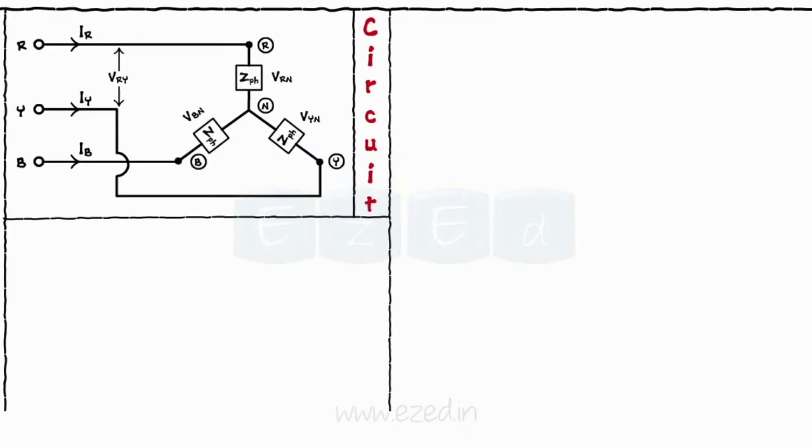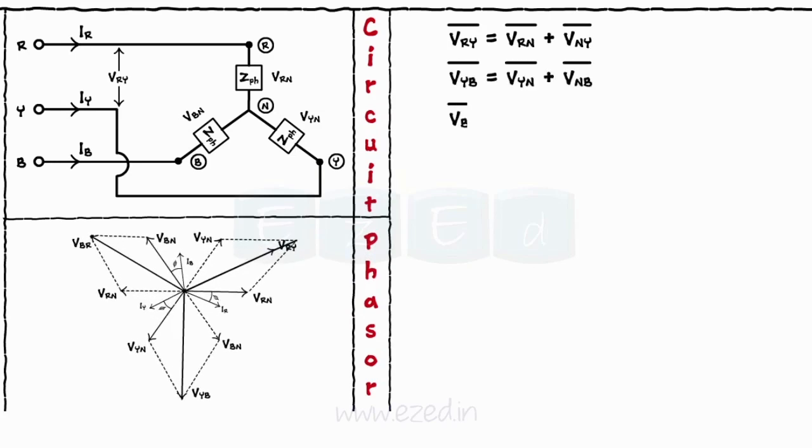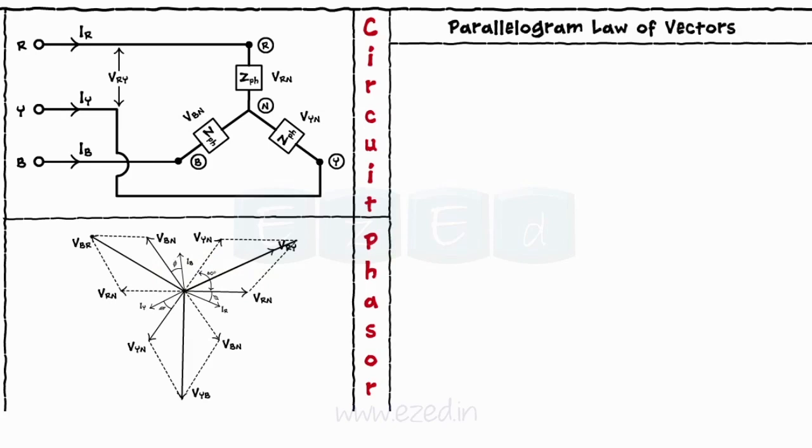It is clear from the circuit diagram that the line voltage Vry is the sum of the two phase voltages Vrn and Vny. From the phasor diagram, the angle between Vrn and Vny equals 60 degrees. According to the parallelogram law of vectors, Vry square equals Vrn square plus Vny square plus 2 times Vrn times Vny times cos of angle between Vrn and Vny.